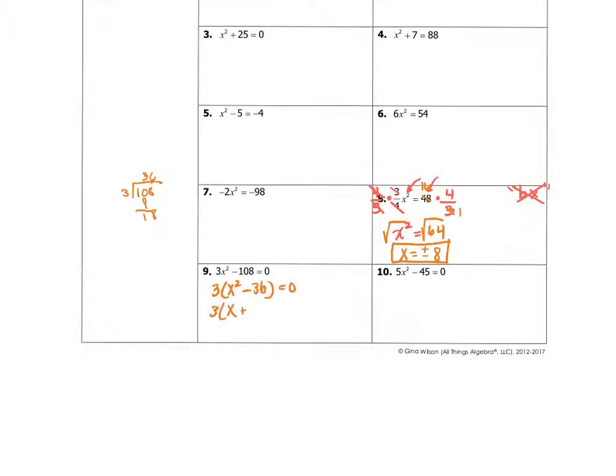So see, this is one of those scenarios where if I wanted to solve by square roots, I'd just be adding 108 to both sides, and then dividing by 3 on both sides, and then I get x² equals 36, which is going to give me plus or minus 6, just like this one's going to give me.